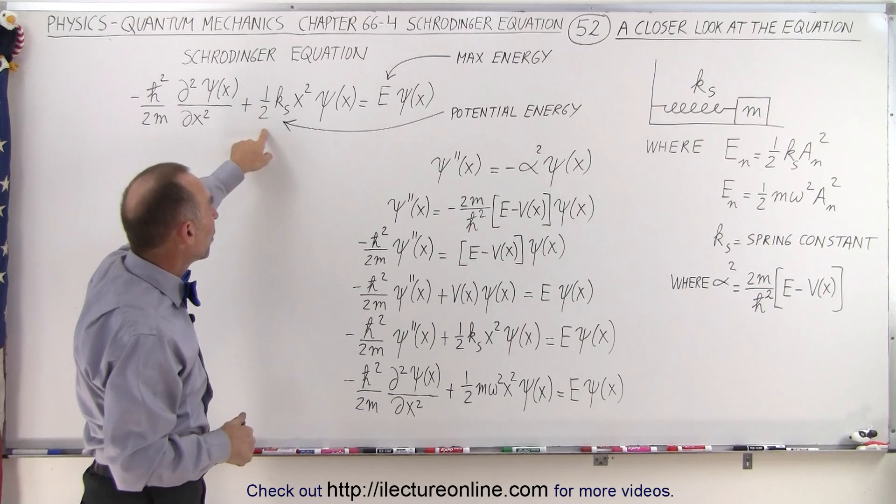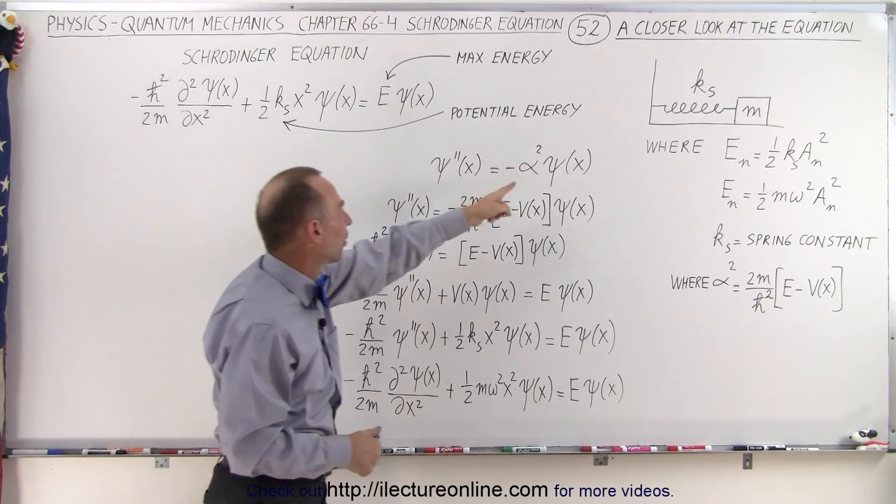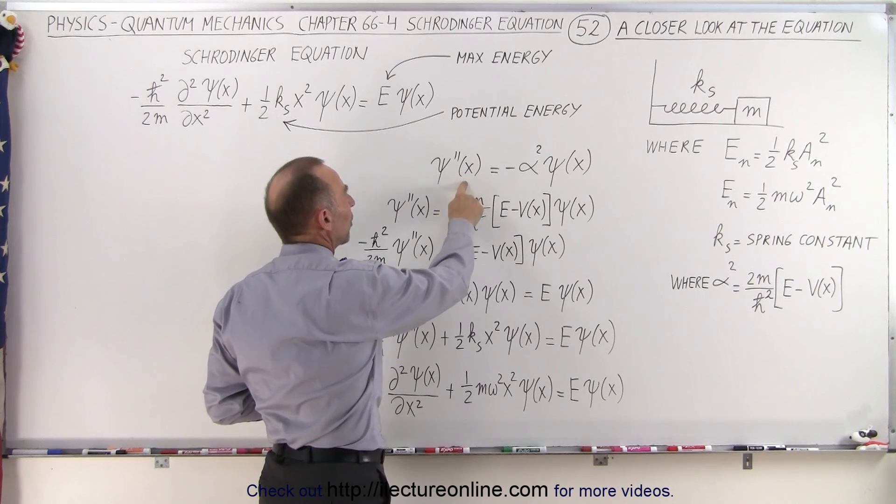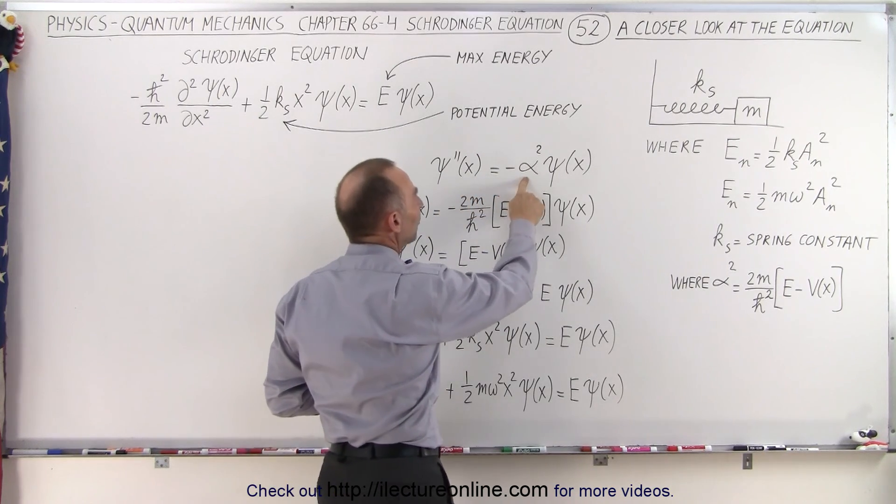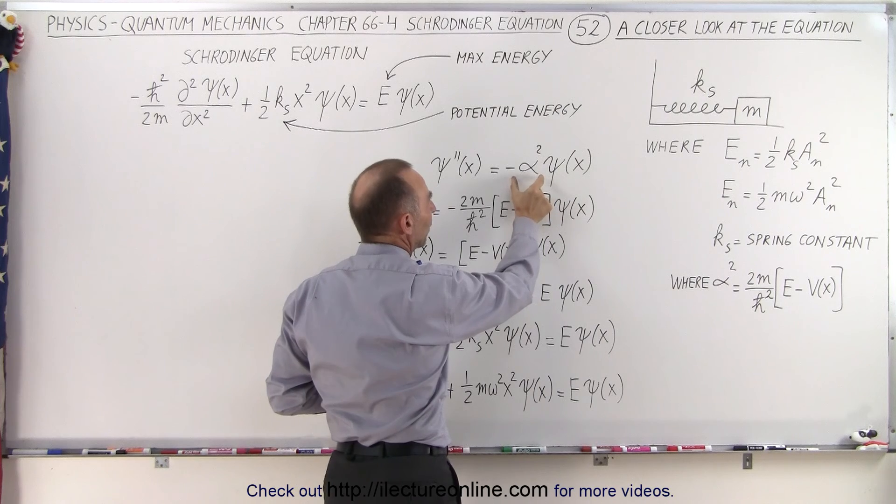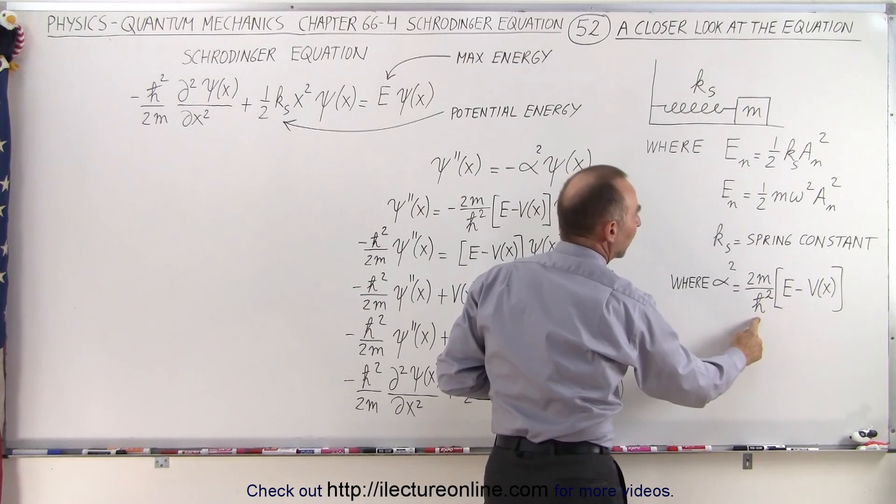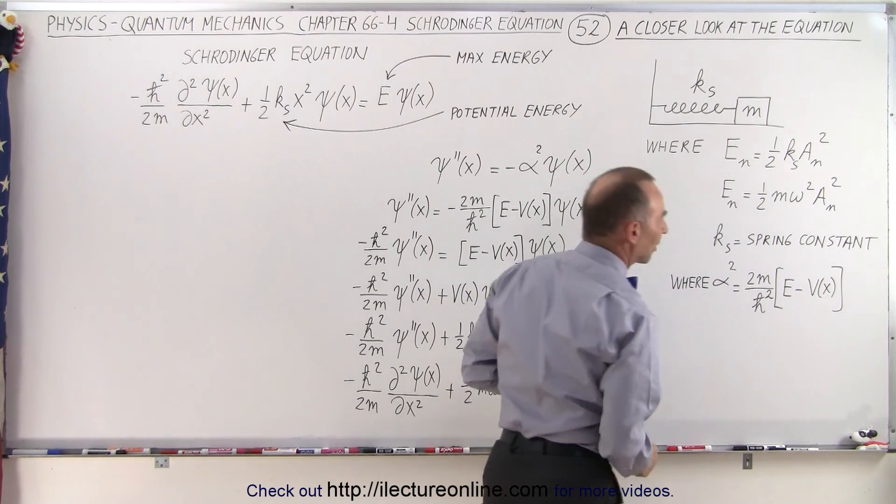So here what we can see is we can see that this can now be expressed like this: we have the second derivative of the wave function squared equals minus alpha squared times the wave function. Now alpha squared is defined right here where it's 2m over h-bar squared times E minus V sub x.